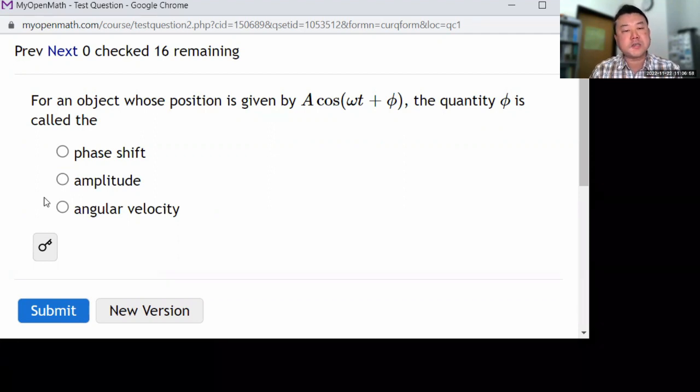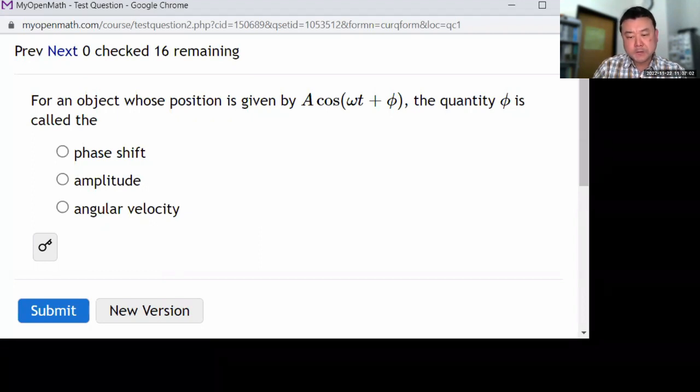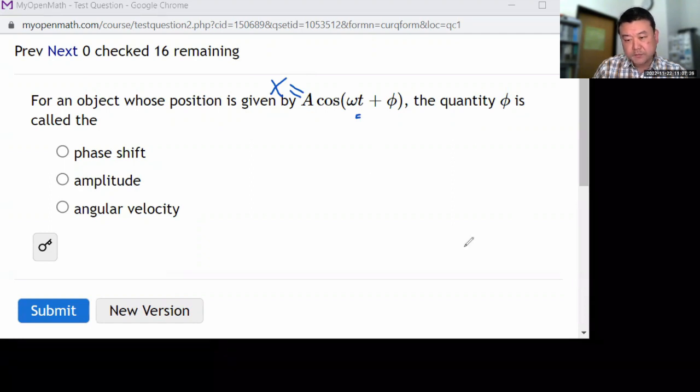So it says, for an object whose position is given by this function, that's its x position as a function of time plus φ, the quantity φ is called... it's a vocabulary test. After you've read through the textbook and/or watch the lectures, you should know the names for, let's see, I guess three constant parameters here.